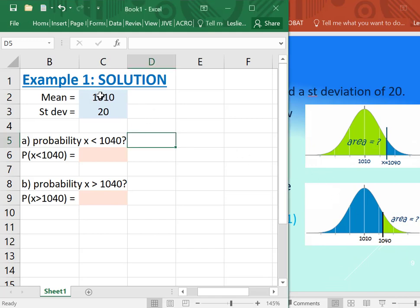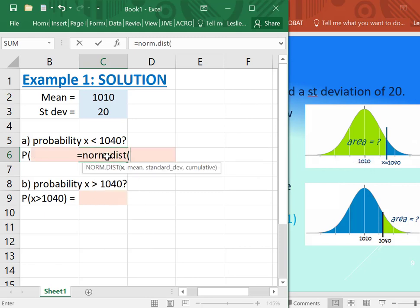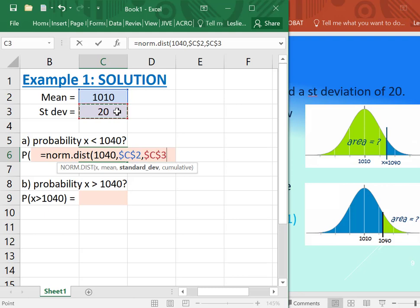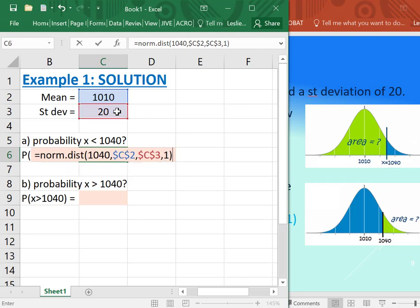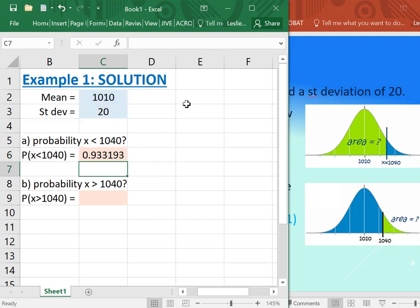Okay, so here we are. I've just entered the mean of 1010, standard deviation of 20. Probability that x is less than 1040—we just use the equals norm.dist, put in 1040, put in that mean. I'm just going to lock the reference; you don't have to in this case, but you can. Standard deviation, and then a one. Always a one here.